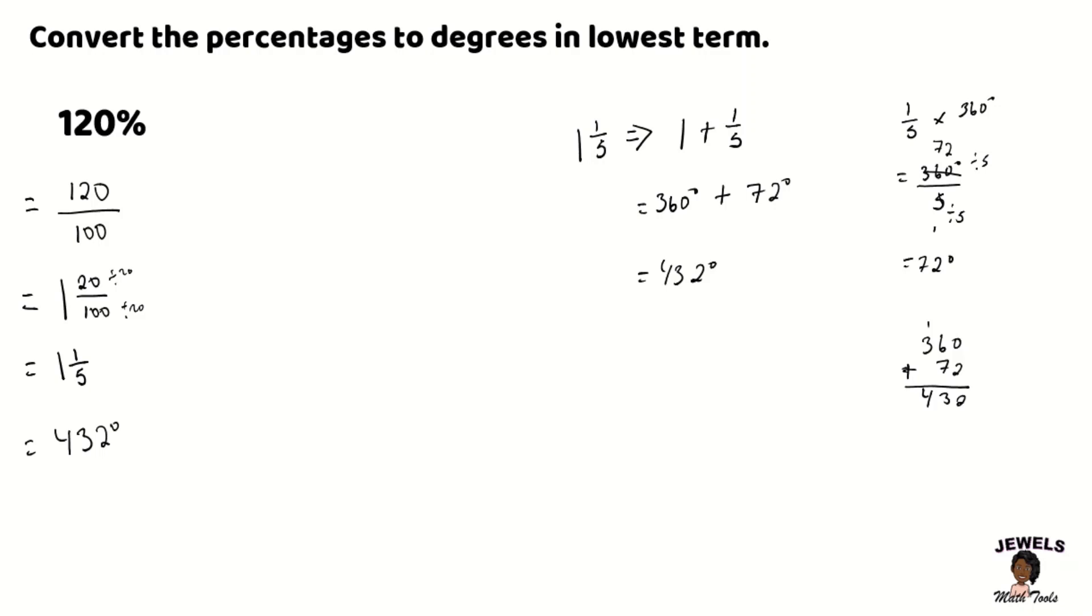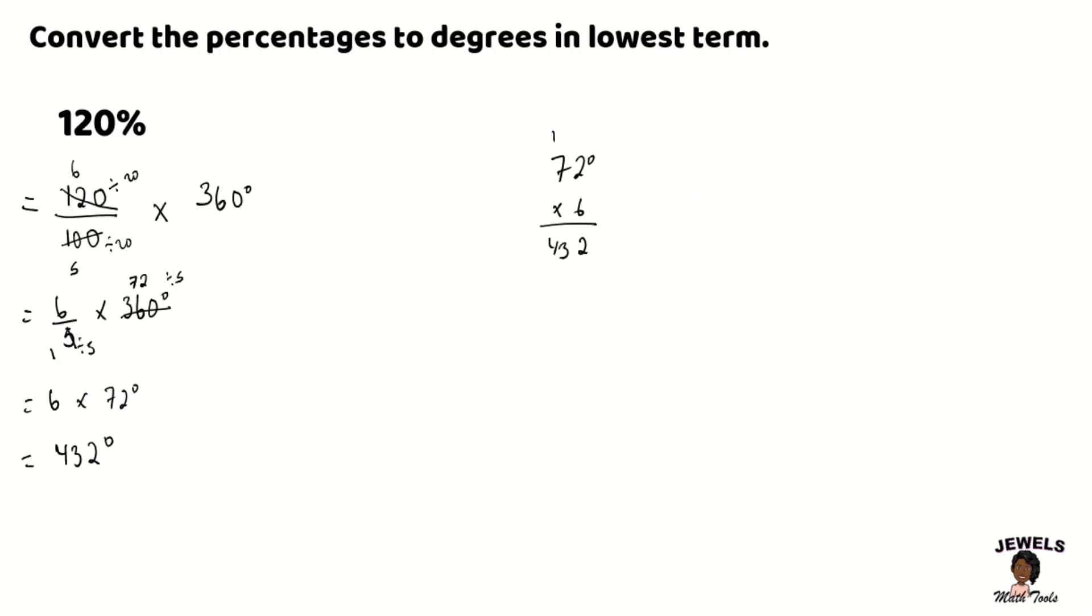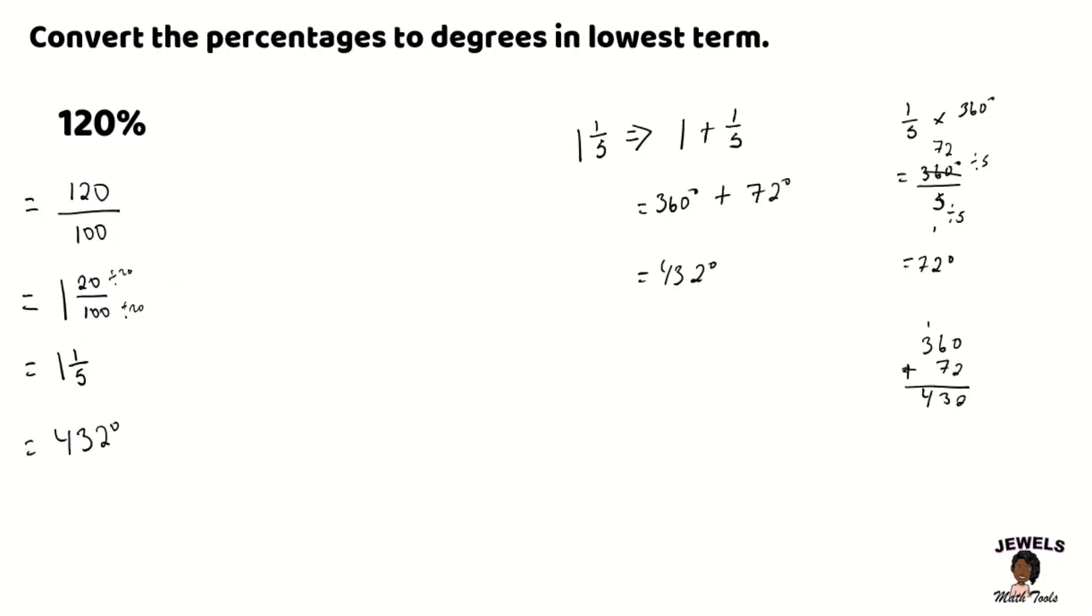And then in our second method we converted our improper fraction into its mixed fraction form changing both parts into degrees and then adding their sum together to again achieve the same answer of 432 degrees.